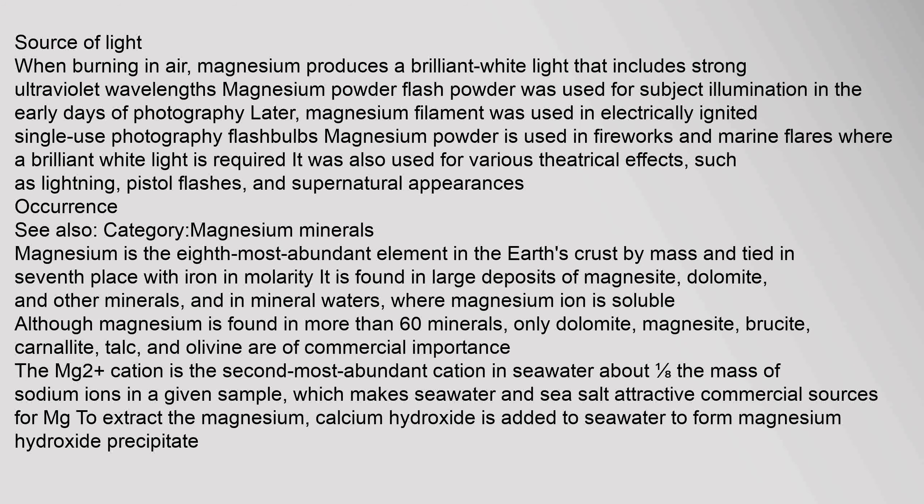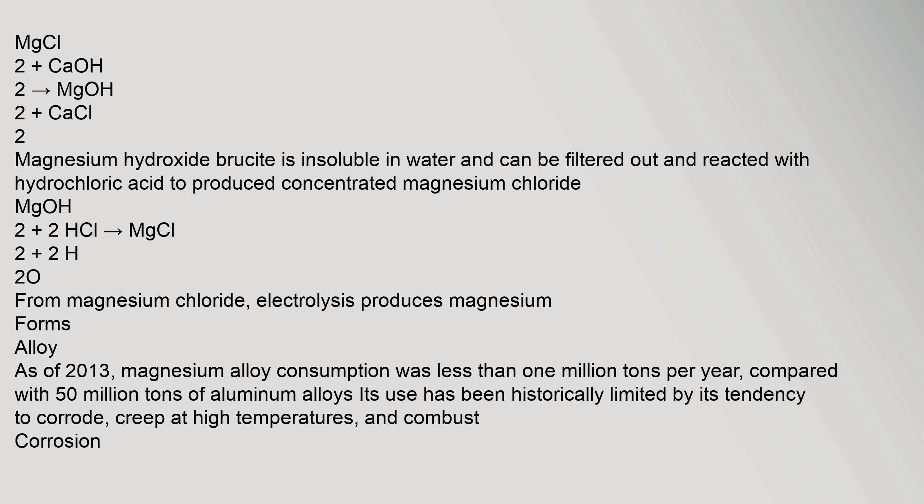talc, and olivine are of commercial importance. The Mg²⁺ cation is the second most abundant cation in seawater — about one-eighth the mass of sodium ions in a given sample — which makes seawater and sea salt attractive commercial sources for Mg²⁺ extraction. Calcium hydroxide is added to seawater to form magnesium hydroxide precipitate: MgCl₂ + Ca(OH)₂ → Mg(OH)₂ + CaCl₂.